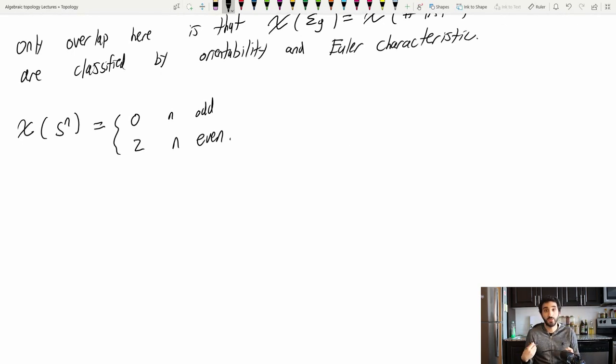So next I want to show you a way in which the Euler characteristic shows up in some unexpected places. In particular here it's going to show up in vector fields. Euler characteristics and vector fields.